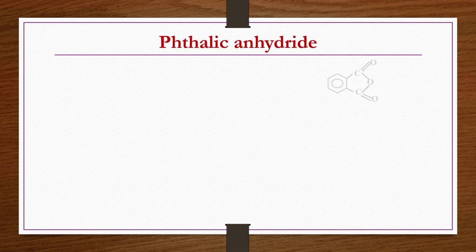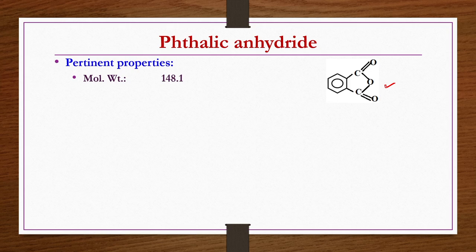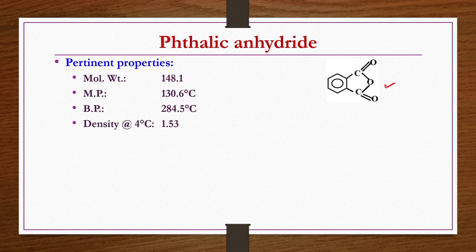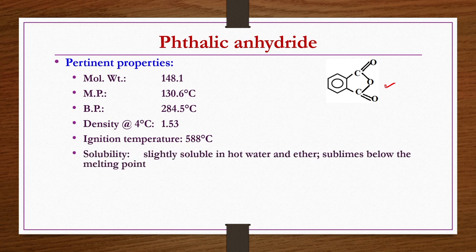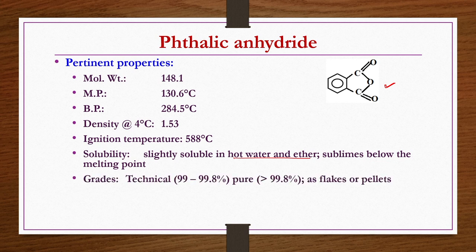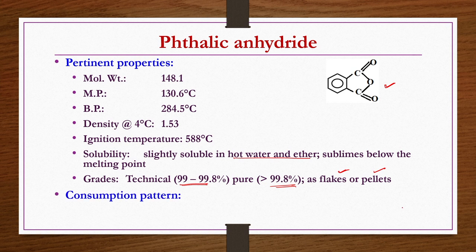Now we discuss phthalic anhydride. Pertinent properties: molecular weight 148.1, melting point 130.6°C, boiling point 284.5°C, density at 4°C is 1.53 g/cc. Ignition temperature is 588°C. It is slightly soluble in hot water and ether, and sublimes below the melting point. Grades include technical grade 99–99.8% and pure grade above 99.8%; available in flakes or pellets. It is primarily used in alkyd resins and plasticizers production.